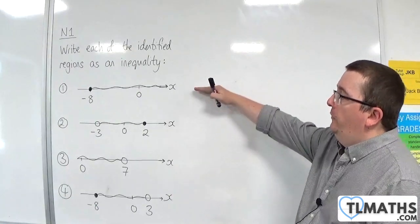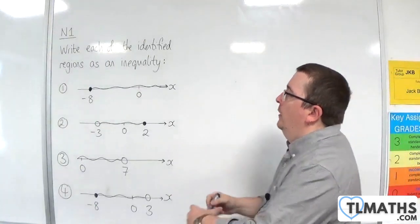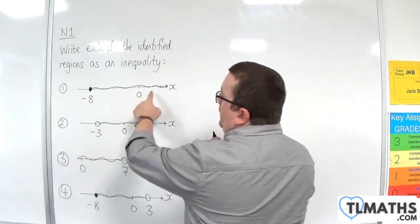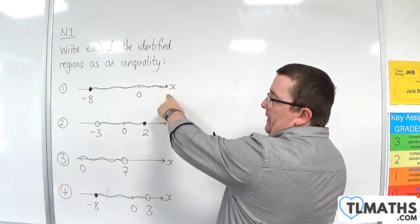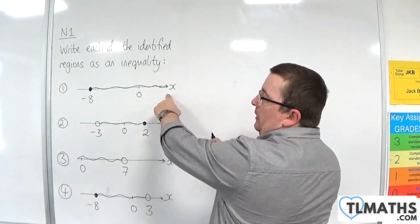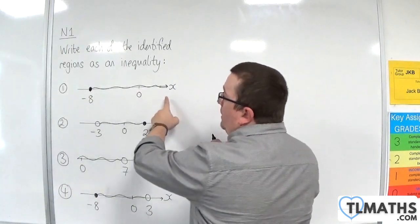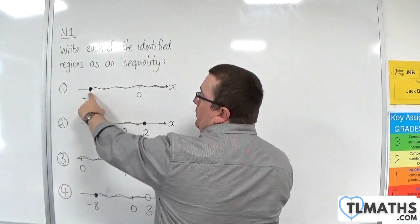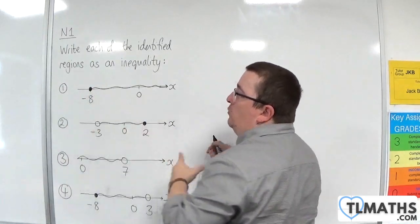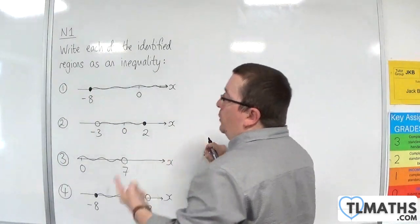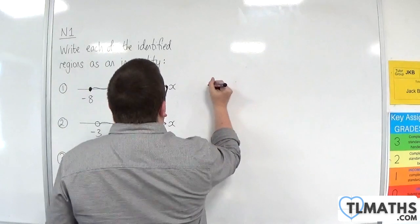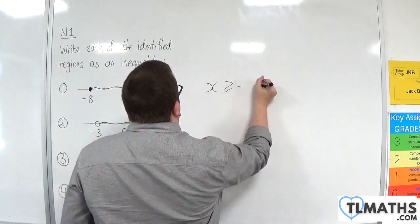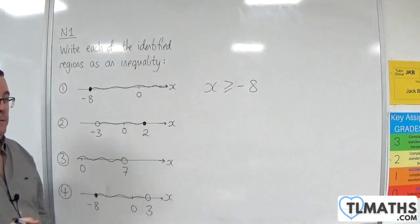For this first one, we have the region to the right of minus 8 shaded. So x has to be greater than minus 8, but because of the solid dot, it has to be greater than or equal to minus 8. So it could be minus 8. So: x ≥ -8.